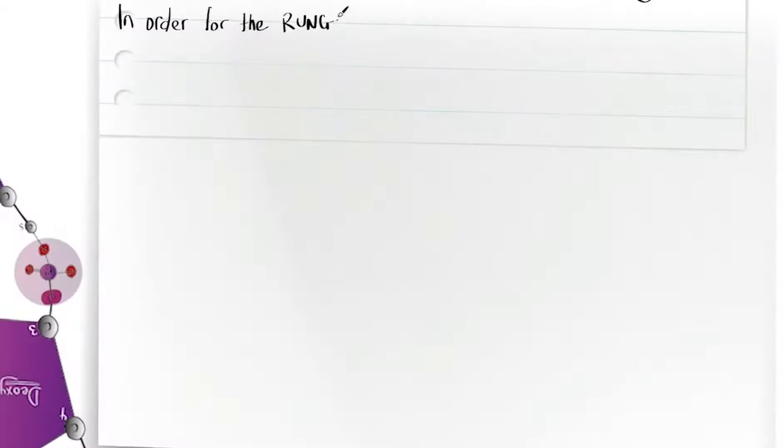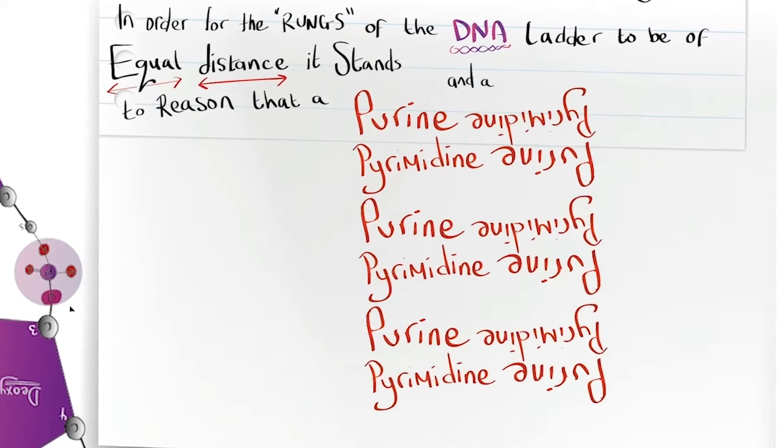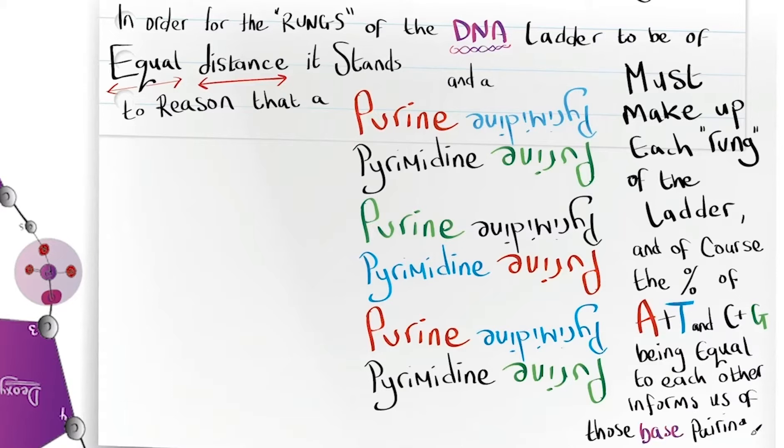In order for the rungs of the DNA ladder to be of equal distance, it stands to reason that a purine and a pyrimidine must make up each rung of the ladder, and of course that the percentage of A and T and G and C being equal to each other informs us of those base pairing rules.